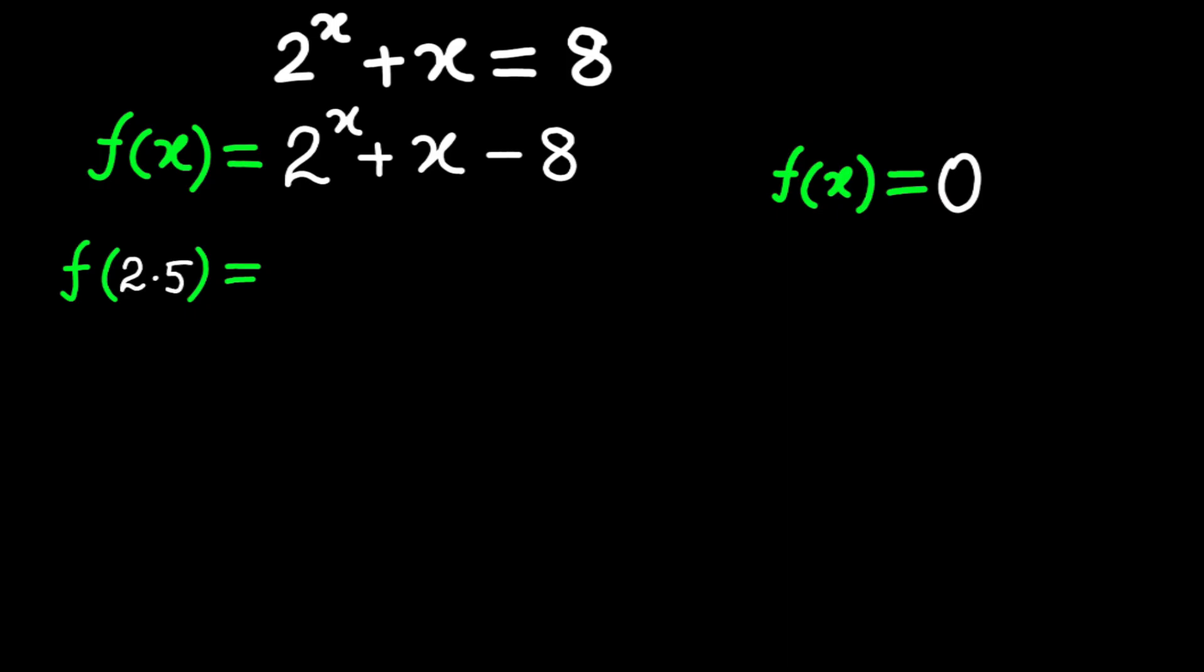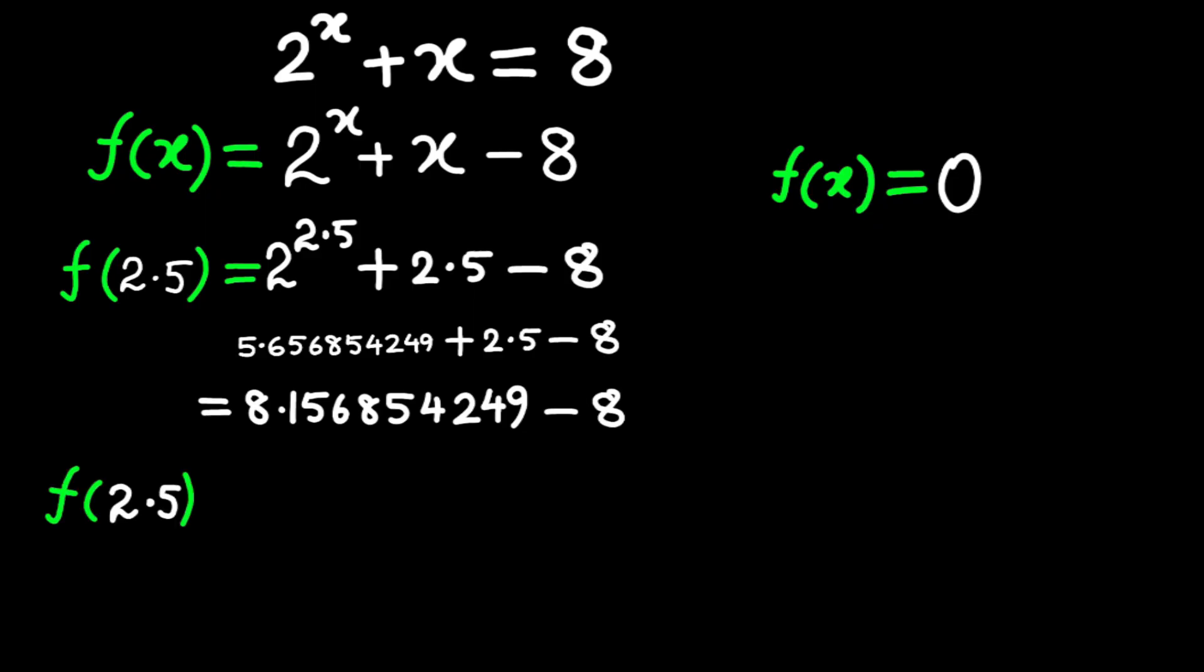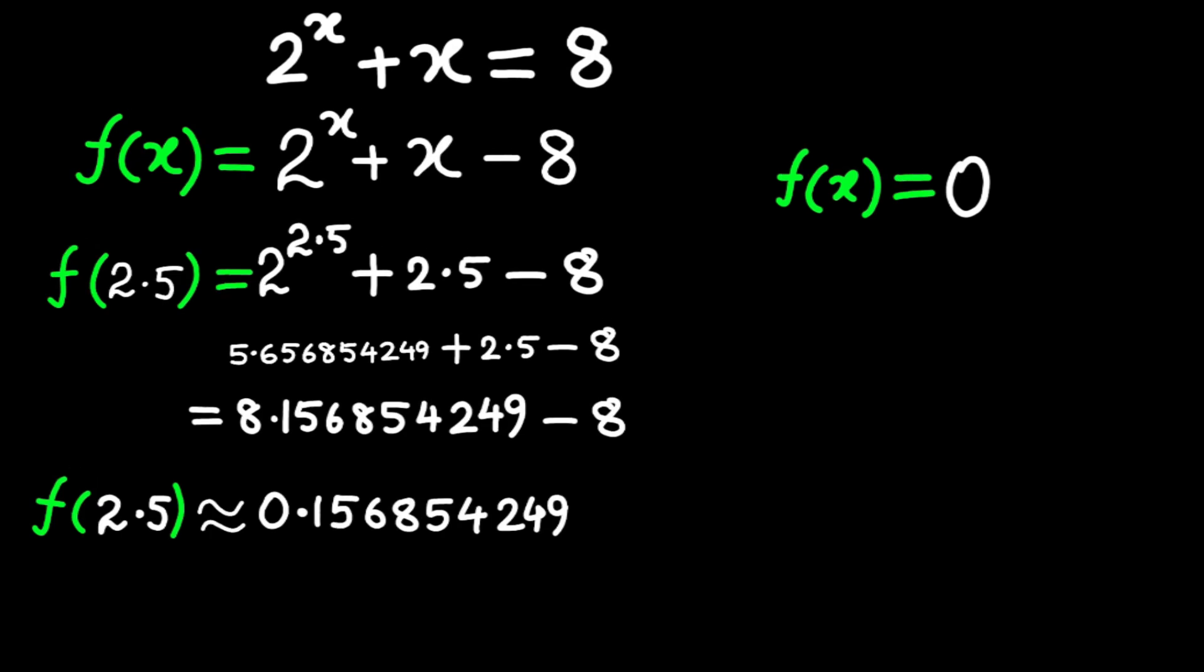Let's take another example. Try x equals 2.5. Here, 2 to the power 2.5 equals 5.656854249 plus 2.5 equals 8.156854249. Subtract 8, f of 2.5 is approximately 0.156854249. Now it's positive. So the root is between 2.4 and 2.5 because f of 2.4 is negative and f of 2.5 is positive. We're tightening the net and it's looking like the root is somewhere around 2.4 something.